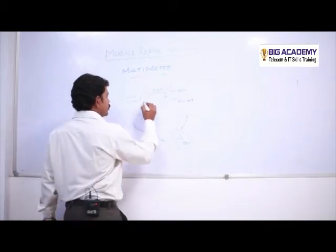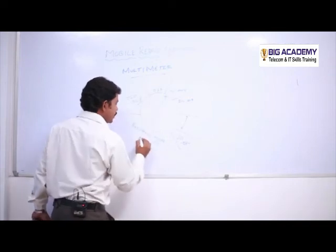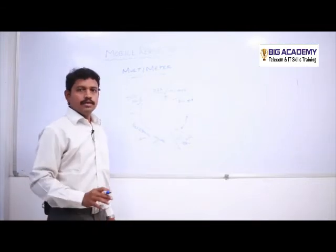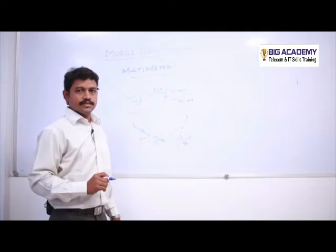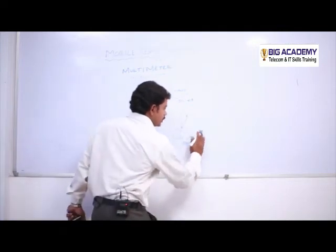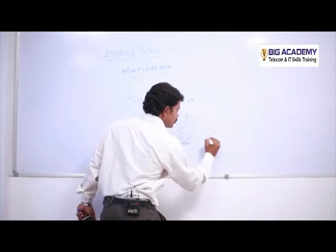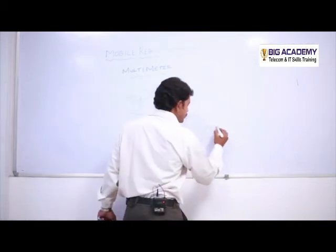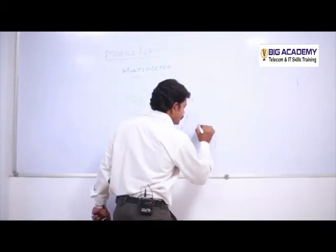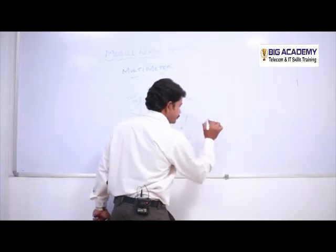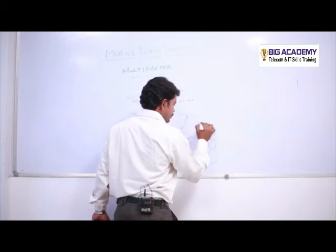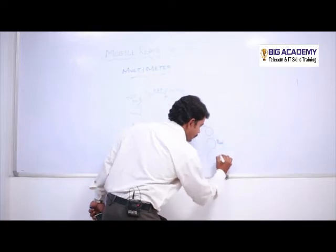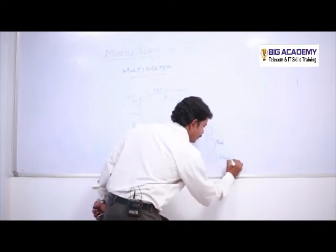So in this we can make use of this DC voltage and the resistor mode and the buzzer mode for doing a mobile service or any electronic gadget service. And at the bottom we will have three probe connections. And one is mentioned as 10 Ampere. It's a DC current. And another one is red in color. Third one is black in color.